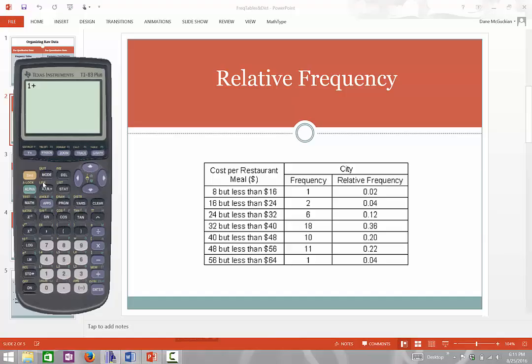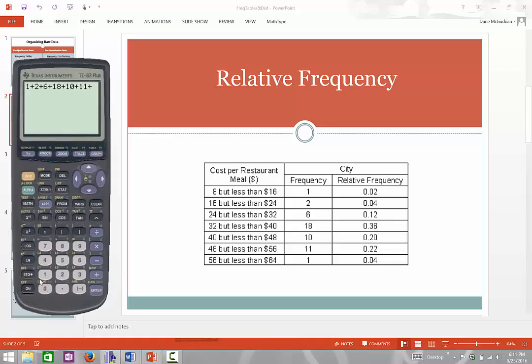We're going to do one plus two plus six plus 18 plus 10 plus 11 plus one. And we get the answer 49. So that's the total number of frequencies.